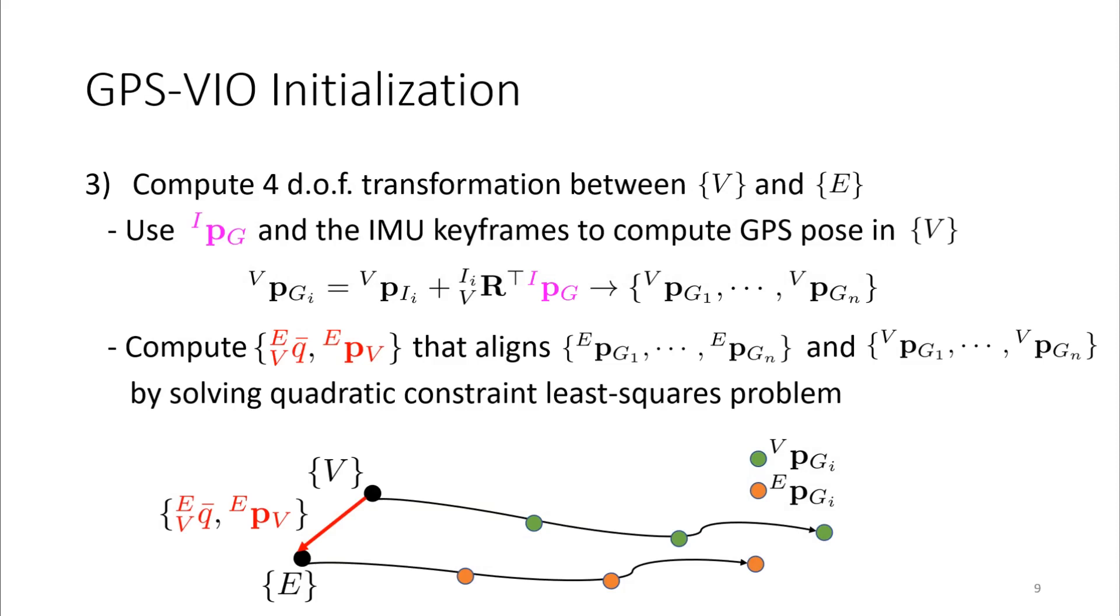Once we reach the threshold, we compute the 4-degree-of-freedom transformation between the VIO and ENU frame by the following procedure. We first convert the IMU keyframes to estimated GPS position in VIO frame by using extrinsics. Then we compute the reference frame transformation that aligns GPS position in the two different reference frames by solving the quadratic constraint least squares problem.